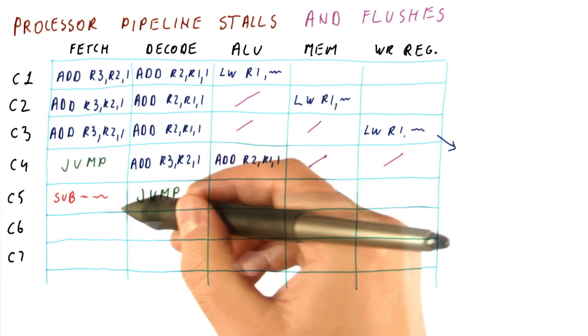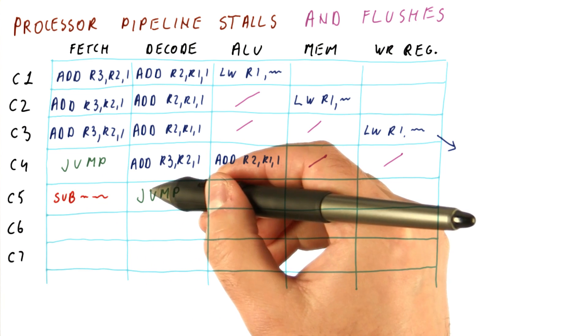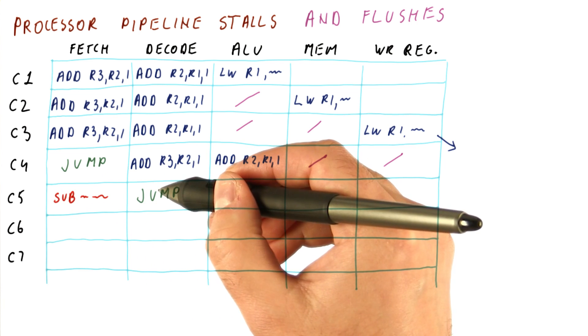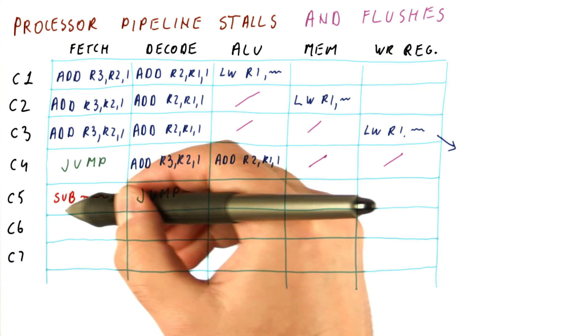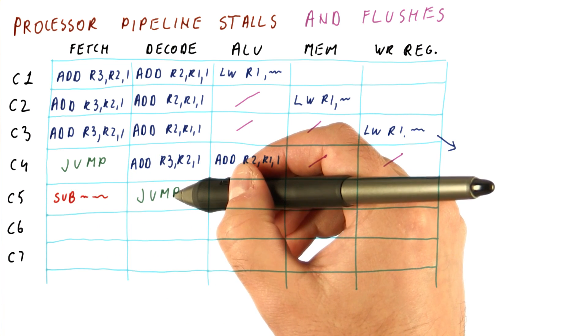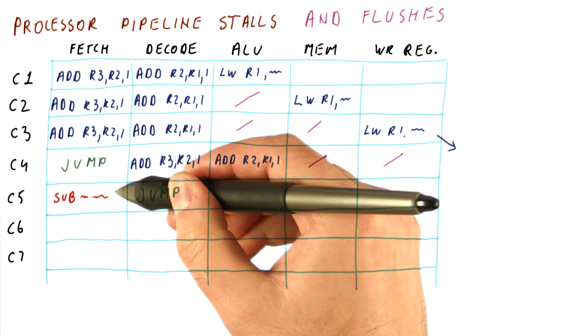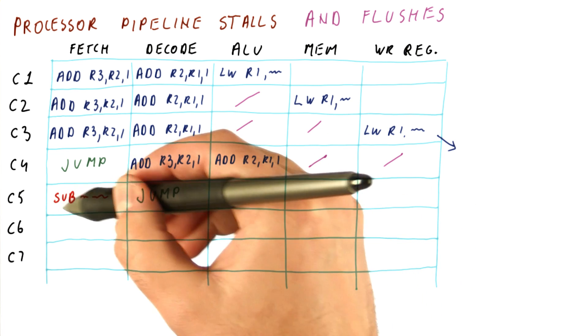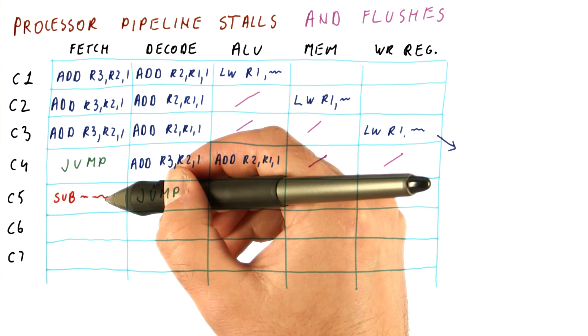So when it moves here, the next instruction we fetch will be the one that follows this jump in memory. So we will have, for example, a subtract that never should have been fetched, because we should have fetched from the location where the jump is going. But at this point where we needed to decide what to fetch, we didn't even know that it's a jump.